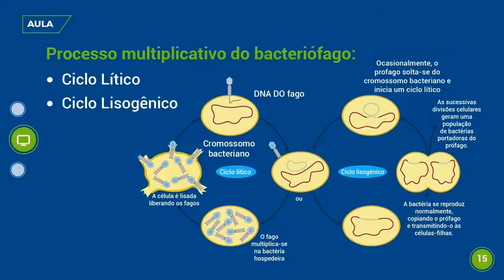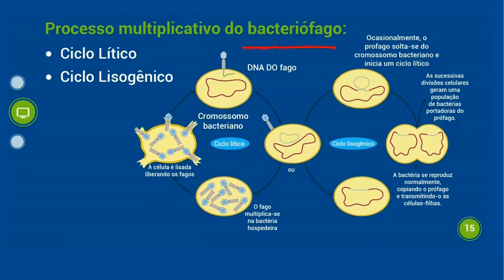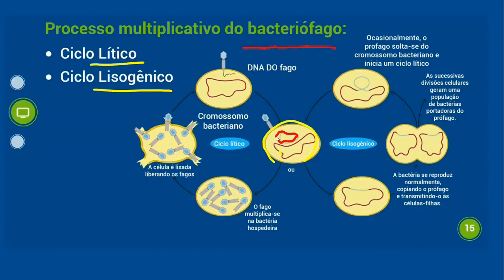Vamos mostrar o processo multiplicativo do bacteriófago — o vírus que invade as bactérias. Esse processo é dividido em dois ciclos: o ciclo lítico e o ciclo lisogênico. Vamos começar pelo ciclo lisogênico. Temos a célula da bactéria com seu cromossoma bacteriano, e o material genético do vírus. Lembrando, não tem núcleo porque a bactéria é um ser procarionte. O material genético do vírus vai se fundir com o material do cromossoma bacteriano.